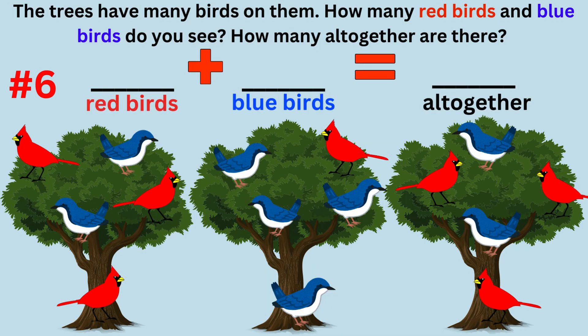Word problem number six: the trees have many birds in them. How many red birds and blue birds do you see? How many altogether are there? The answer is there are seven red birds and eight blue birds, so there are 15 birds in the trees altogether. The number sentence is 7 plus 8 equals 15.